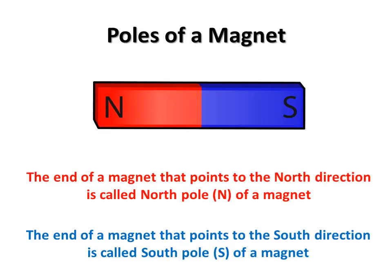Poles of a magnet. A magnet has two poles, that is the north pole and the south pole. As we have seen, a magnet always settles in the north-south direction. So, how will we come to know which is the north pole of a magnet? The end of a magnet that points to the north direction is called the north pole, and the end that points to the south direction is called the south pole.